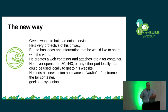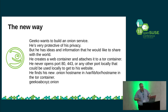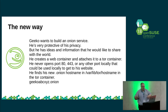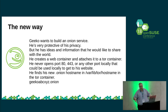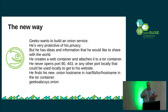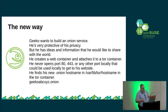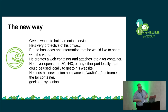The new way: Geeko wants to build an onion service, but he's very protective of his privacy. He's got ideas and information he'd like to share with the world, but doesn't necessarily want people to know who he is. He creates a web container and attaches it to the Tor container, which is what we're going to do today. He never opens port 80, 443, or any other port locally, so if you do an nmap on his server, you're not going to see those ports open. Apache thinks it's open and will bring in traffic on those ports, but they're not really open. The Tor service will actually bring in that traffic and make Apache think it's coming in on port 80. He finds his new onion hostname at /var/lib/tor/hostname on the container.